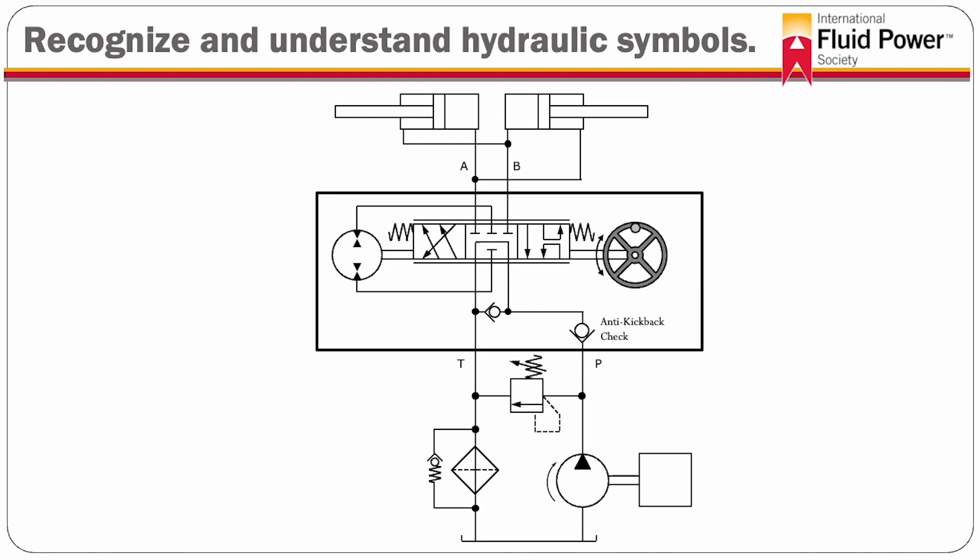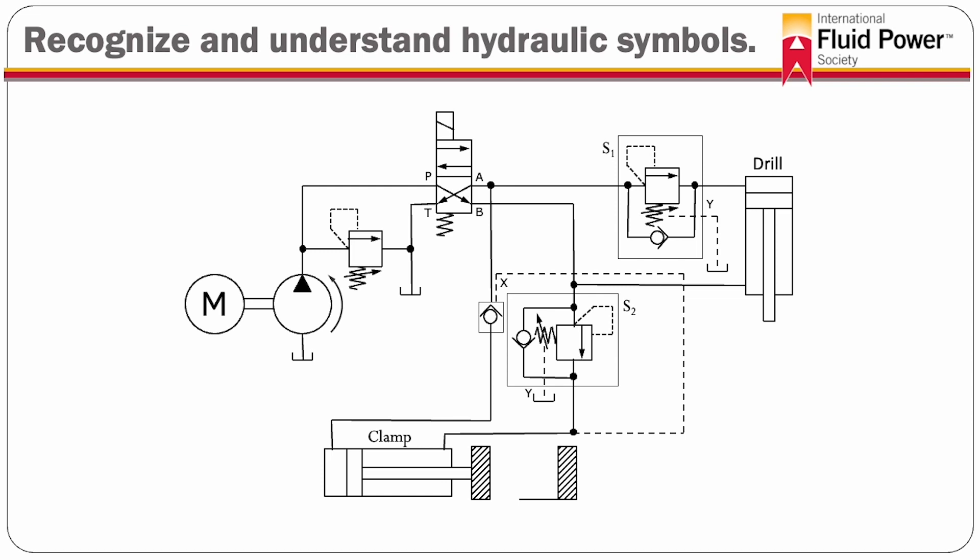Symbols represent the universal language of the fluid power industry. It is the use of these symbols that allow anyone familiar with them to read and understand a fluid power circuit, no matter their native language. The ability to read and interpret a circuit diagram is vital to anyone involved in the transfer of energy through fluid, be it hydraulic or pneumatic, industrial or mobile.